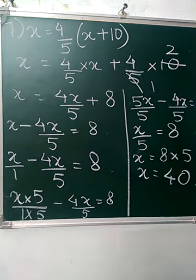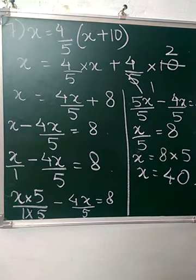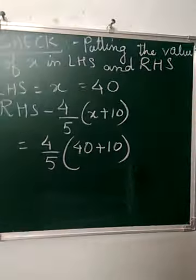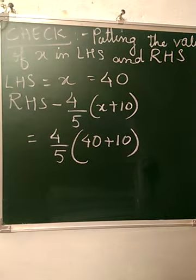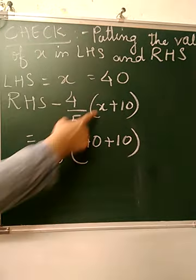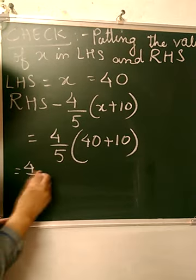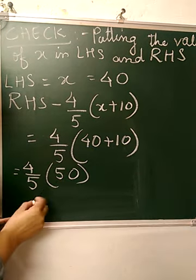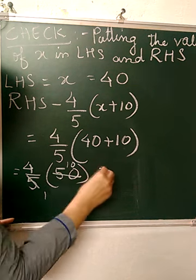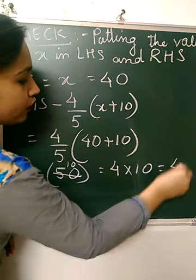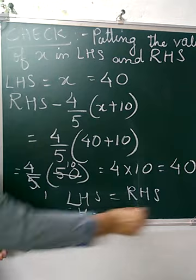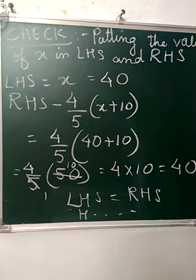So the value of x is 40. Now we are going to check the result. Putting the value of x in LHS and RHS: LHS is x, which equals 40. RHS: we put the value of x as 40. 40 plus 10 gives you 50. Now 50 and 5 can get cancelled — 5 tens are 10, so it is 4 into 10, which equals 40. So LHS is equal to RHS. Hence verified. This completes question number 7.